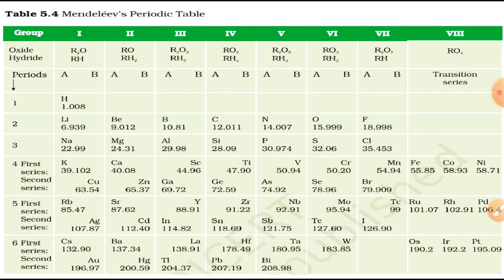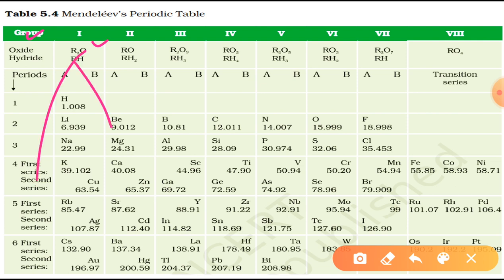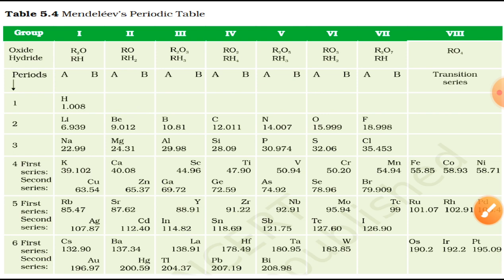Here on the top of the table, you can see a row labeled 'oxide.' You can see R₂O — this is the type of oxide formed by the members of that group. Then RO, the type of oxide formed by those group members. In this manner, oxides and hydrides — the compounds formed with oxygen and hydrogen respectively — were selected as criteria for classification.